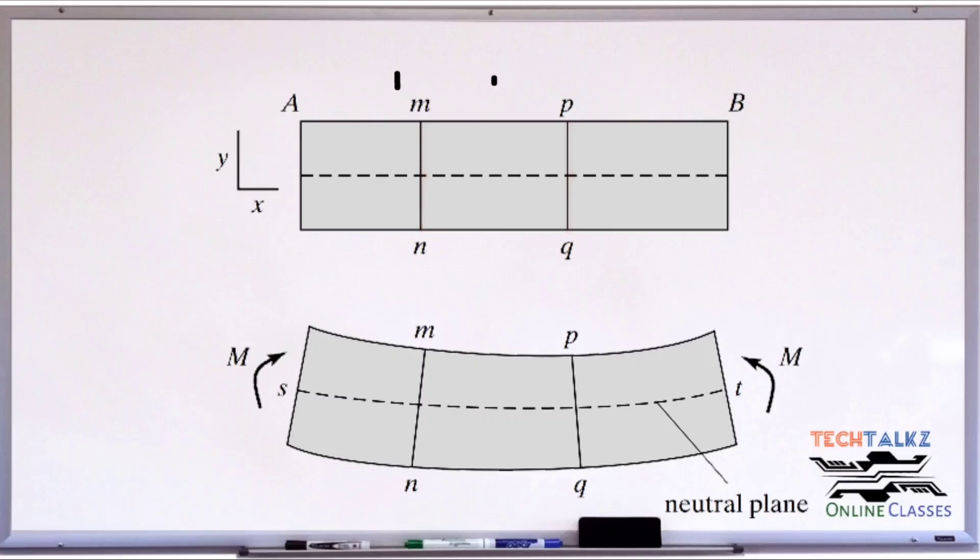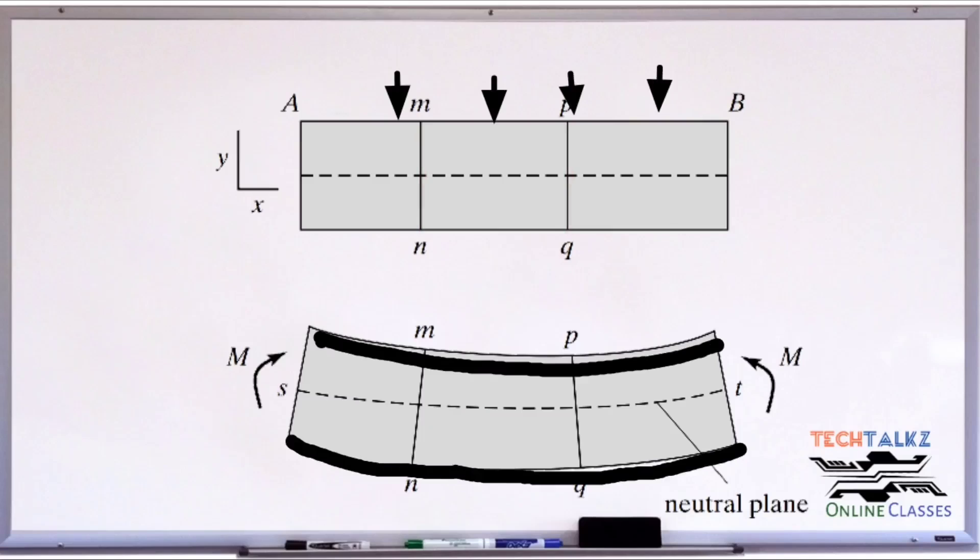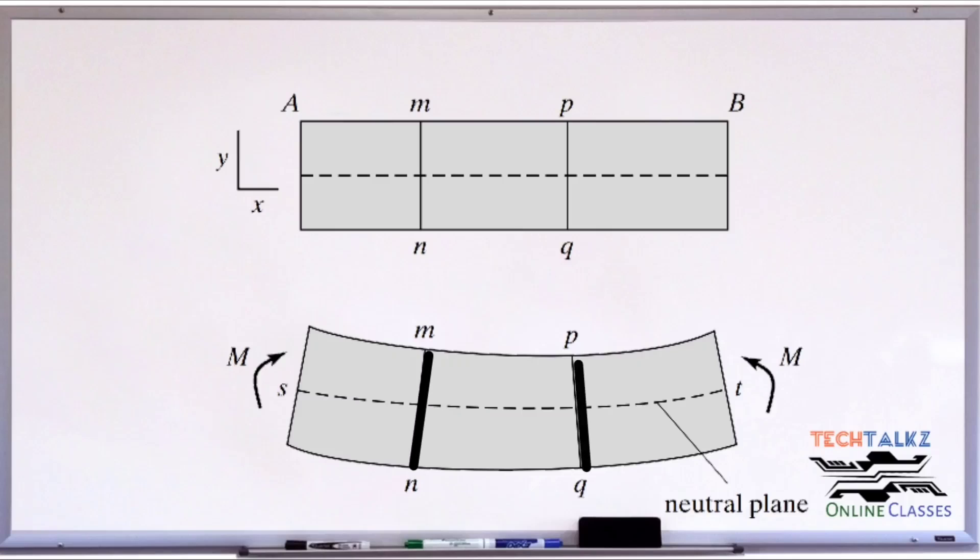Now, if we apply the load, there will be bending. Because of these bending deformations, cross sections MN and PQ will have angular displacement. That is, they rotate with respect to each other about the axis perpendicular to the XY plane.